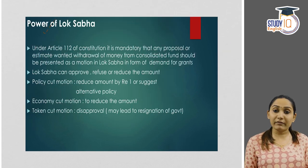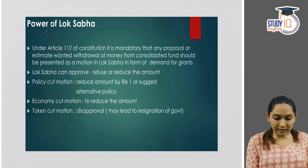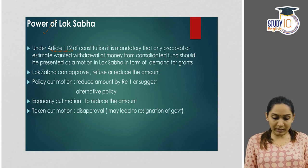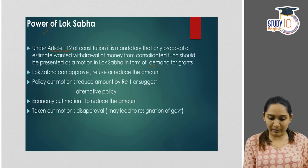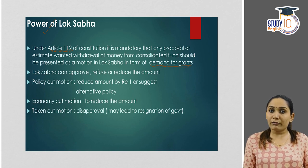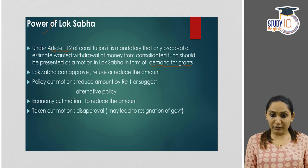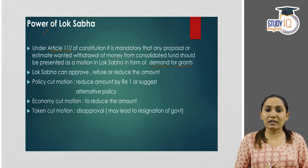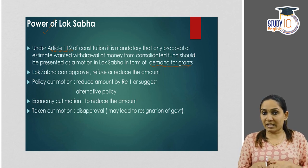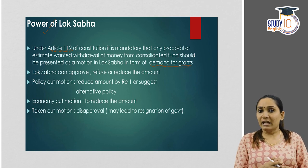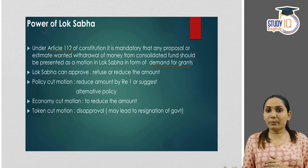Now let's look at the powers of Lok Sabha with regard to demand for grants. Under Article 112 of the Constitution, it is mandatory that any proposal or estimate for withdrawal of money from the Consolidated Fund be presented as a motion in Lok Sabha for demand for grants. As mentioned, there are two types of expenditure withdrawn from the Consolidated Fund. The first is charged expenditure, for which the parliament does not vote. The Constitution does not prohibit discussion on these expenditures, but voting is not allowed.